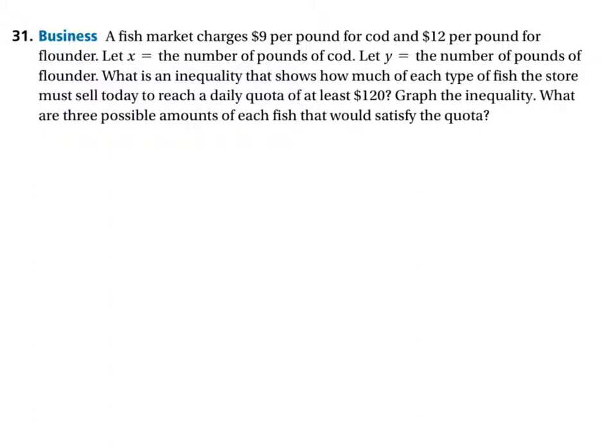So essentially, if we're trying to find out the total cost, then we would say if we have, let's say, X number of pounds of cod, then we multiply that by the cost of each pound of cod, $9, to find the total amount of money that we're going to bring in from cod for X pounds of cod sold.